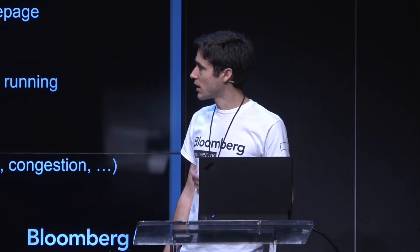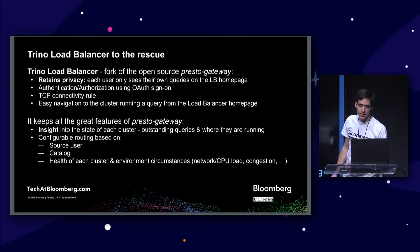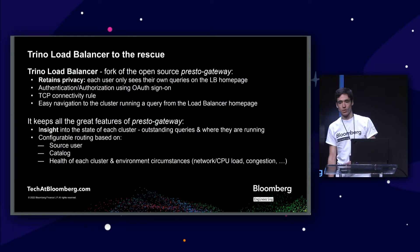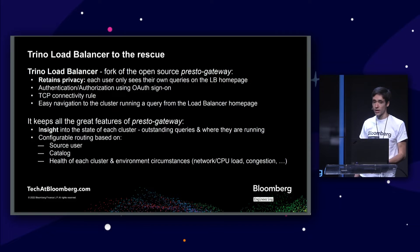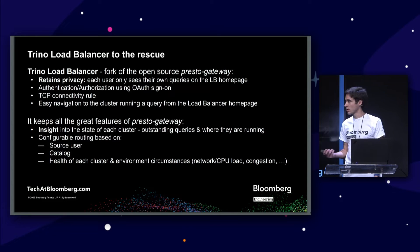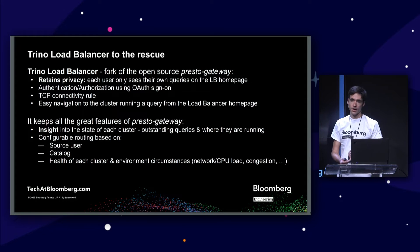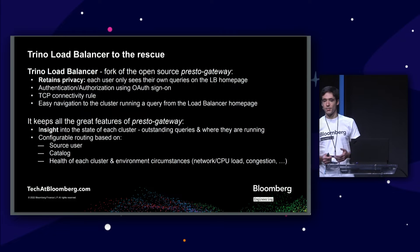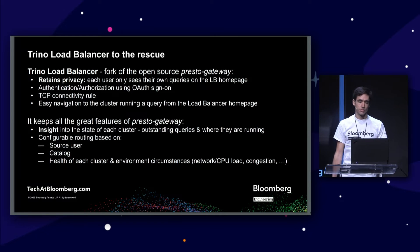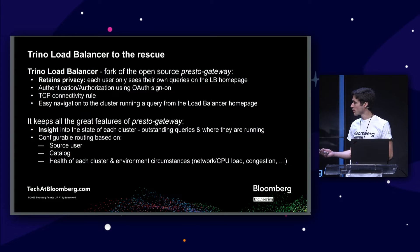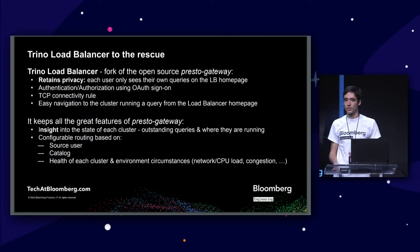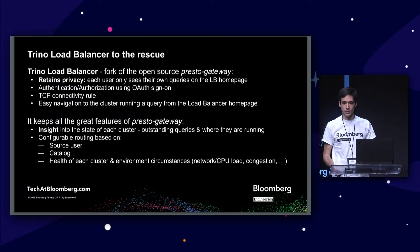To keep the cluster always available, we have the Trino load balancer — a fork of the open source Presto Gateway. Presto Gateway has features like insight into cluster state: how many queries are running, which cluster they're on, how many are pending, when they were sent, and what users sent them. It also lets you configure routing based on parameters like source user, catalog, or cluster health.